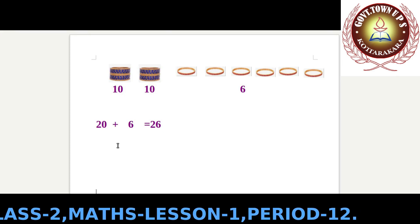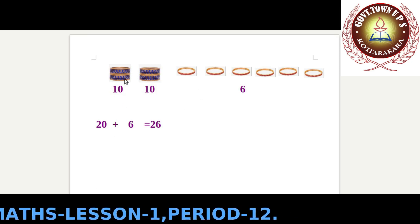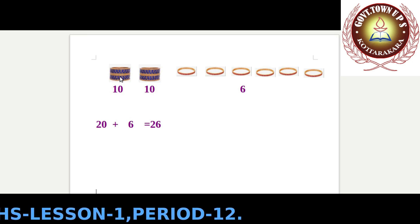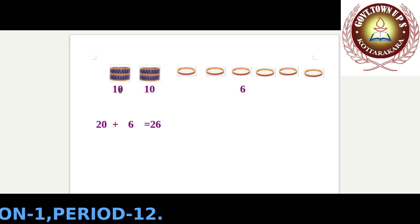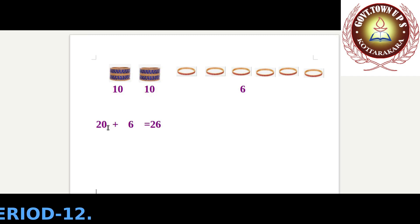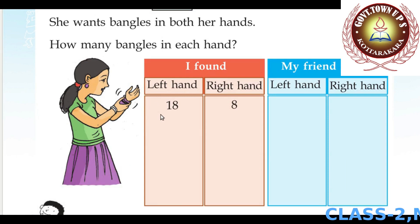Here are two packets of ten bangles — one packet of ten, two packets of ten — and one, two, three, four, five, six more. How many bangles in all? Two tens is twenty, plus six. Twenty plus six equals twenty-six bangles in all. Nandina got 26 bangles.